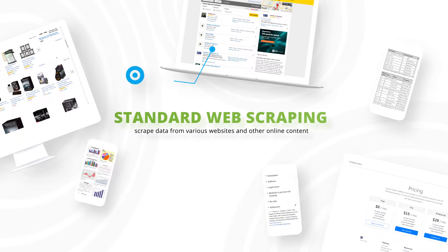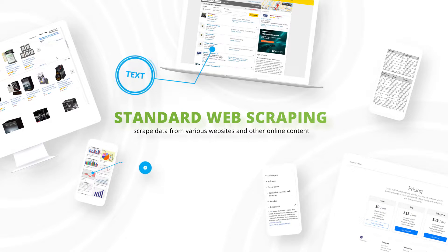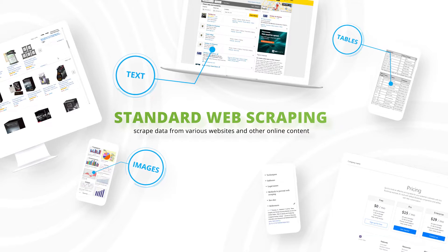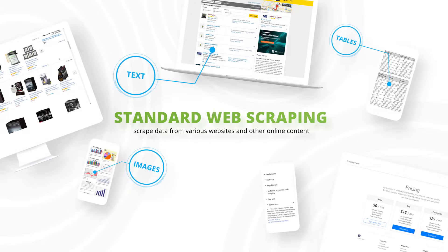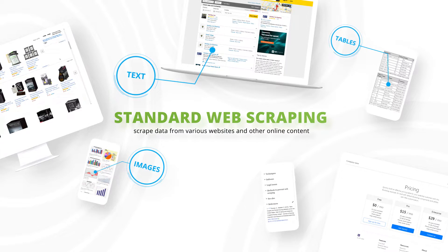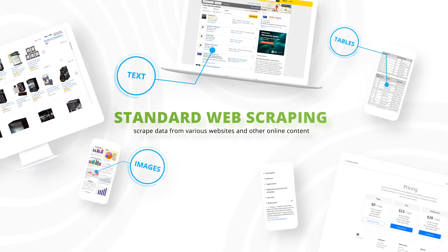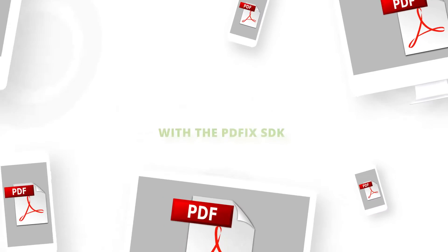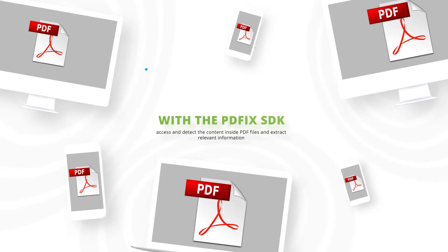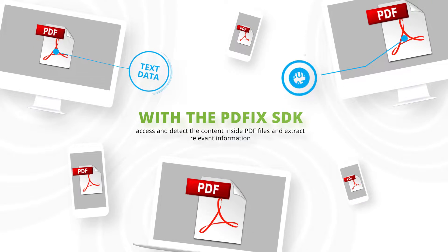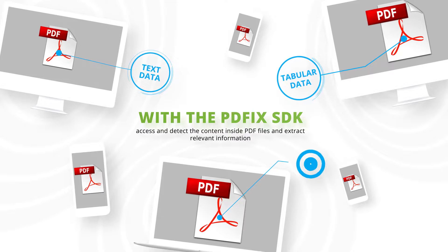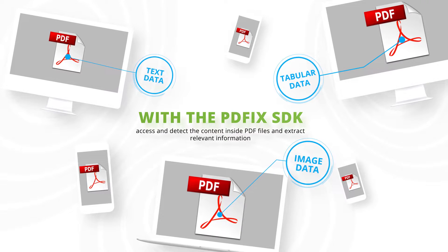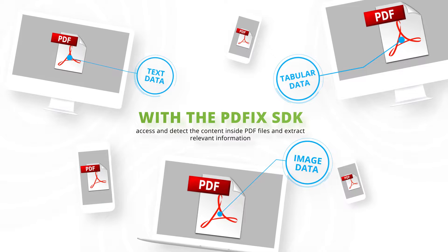Most web scraping technologies can collect data from various websites and other online applications, then output the desired content to a structured format for further processing, but you cannot access data in a PDF. Billions of PDF files stored online form a huge library of information.